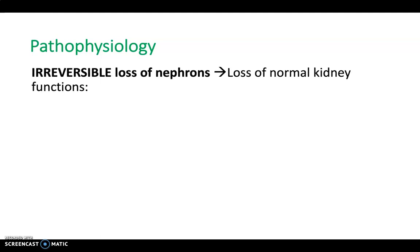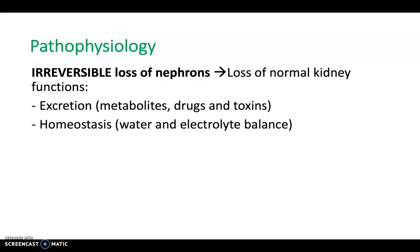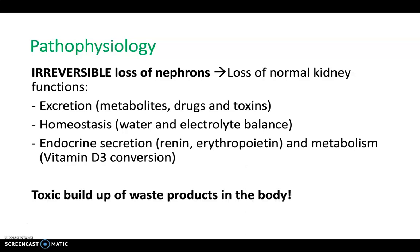The pathophysiology of CKD involves an irreversible loss of nephrons, which leads to a loss of the normal kidney functions such as: excretion of metabolites, drugs, and toxins; homeostasis — the water and electrolyte balance; endocrine secretion of renin, which is secreted by the juxtaglomerular cells and is important in the renin-angiotensin system for blood pressure regulation; erythropoietin, secreted by the endothelial cells and important for red blood cell production; and endocrine metabolism including vitamin D, which is important for bones and prevents diseases like rickets or osteomalacia. Overall, this leads to a toxic buildup of waste products in the body, which is why you get a variety of symptoms with CKD.